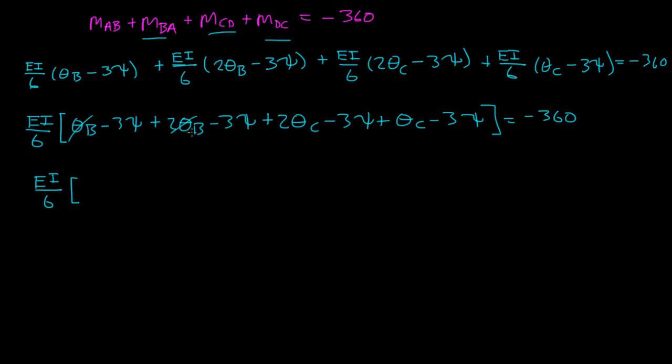Then you have 2 theta C here, theta C here, that's plus 3 theta C. Then you have 1, 2, 3, 4, negative 3 psi, so that's minus 12 psi, that's equal to negative 360.